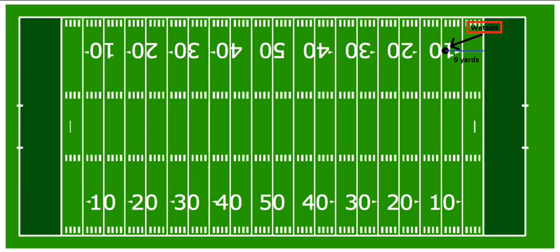He's also standing right at the numbers, and we need a bit more information to figure out how far he is from the sideline. According to the NFL rulebook, the bottom of the numbers starts 12 yards in from the sideline. The height of the numbers themselves are 2 yards apiece, and Ben is standing roughly in the middle of those, so let's say he is 13 yards from the sideline. The other number we need is the width of the field — according to the NFL rulebook, the width is 160 feet, which is 53⅓ yards.